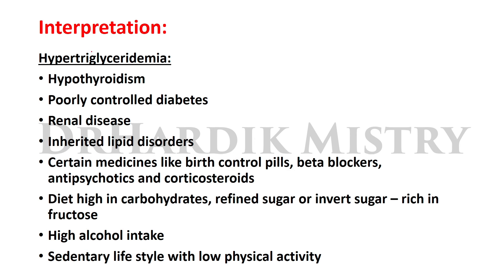Interpretation — hypertriglyceridemia means the triglyceride value is high or above normal. Causes include: hypothyroidism, poorly controlled diabetes, renal disease, inherited lipid disorders, certain medicines such as birth control pills, beta blockers, antipsychotics, and corticosteroids, diet high in carbohydrates, refined sugar or invert sugar rich in fructose, high alcohol intake, and sedentary lifestyle with low physical activity.